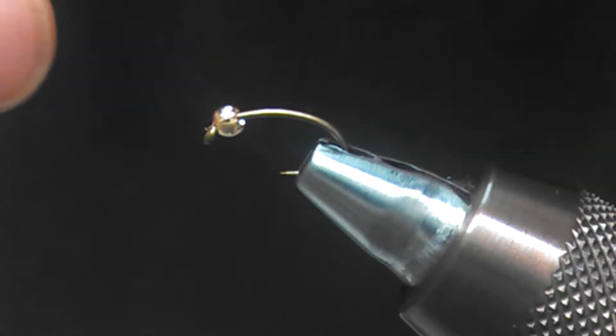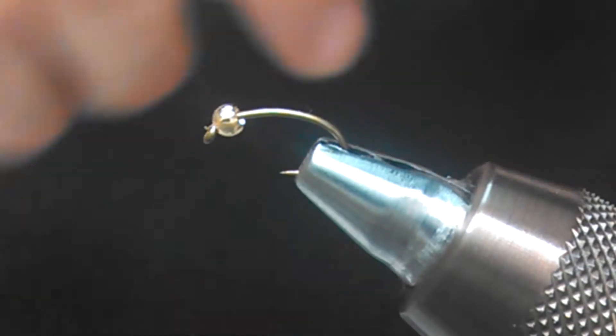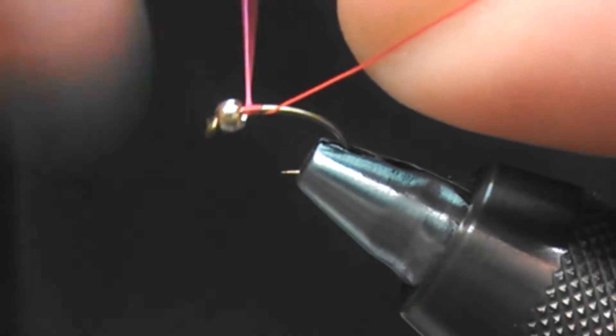If you want, you can tie a little bit of wrap around the head to add a hot spot as well. So we're going to start by tying a bit of a thread body here.